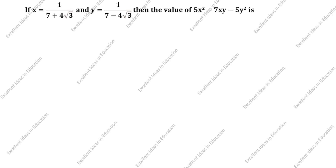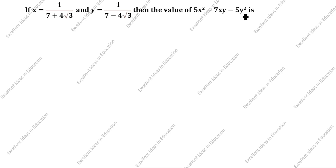Hi friends! Welcome to my channel Excellent Ideas in Education. Today we are going to solve this problem. If x is equal to 1 divided by 7 plus 4 root 3 and y is equal to 1 divided by 7 minus 4 root 3, then the value of 5x square minus 7xy minus 5y square is. Now we will find this value.